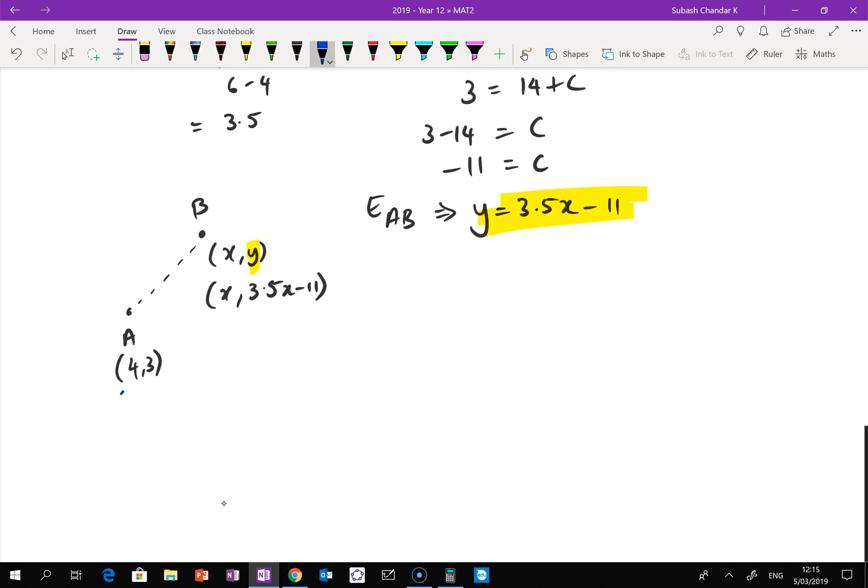And then I'm going to work out my distance. So remember, the distance formula is y2 minus y1 squared plus x2 minus x1 squared. Now the distance I want is 20. So that's going to be 20 equals square root of (3.5x minus 11 minus 3) squared plus (x minus 4) squared.